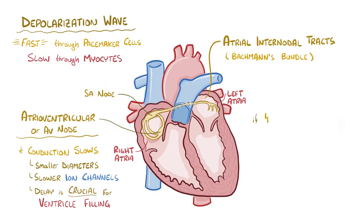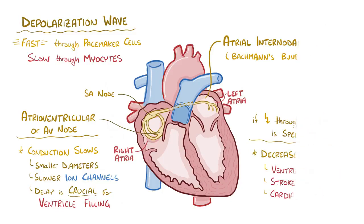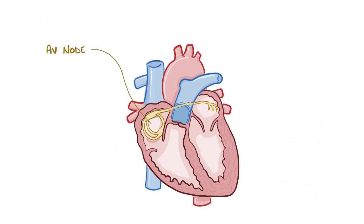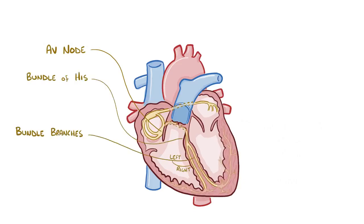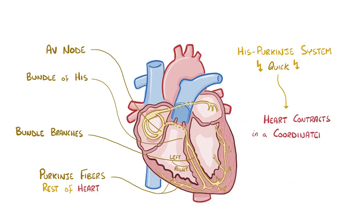If conduction through the AV node is sped up, there's less time for ventricular filling, resulting in a decrease in stroke volume and cardiac output. From the AV node, the depolarization wave travels through the bundle of His, then into the left and right bundle branches, and into the Purkinje fibers. The His-Purkinje system conducts the depolarization wave really fast, which is important because it makes the heart contract in a coordinated way — otherwise, blood would slosh back and forth rather than getting forcefully pushed out to the lungs and body.